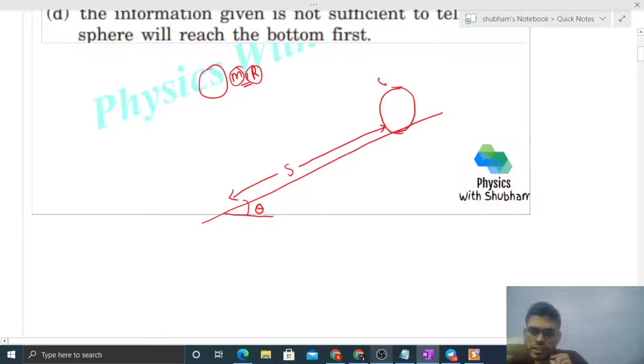Initial velocity is zero, acceleration is a parallel to the incline surface. Then time will be simply square root of 2s upon a. How to find this? Simply use s equals ut plus half at squared. Since u is zero, we get time as square root of 2s upon a.